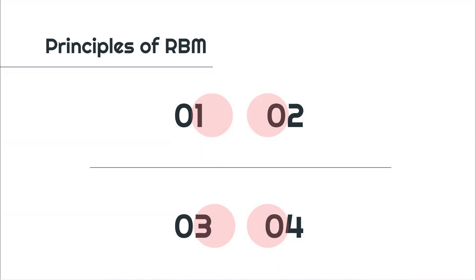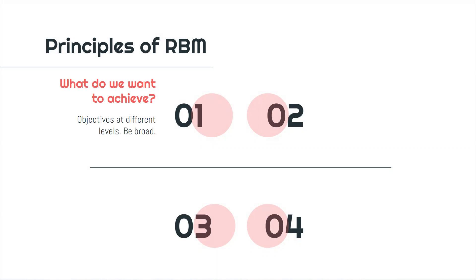Let's get into the actual principles of RBM. RBM seeks to answer the question: what do we want to achieve? Here, we're talking about objectives at different levels — you can be as broad as possible. If you remember in the results framework video, we spoke about outputs leading to outcomes leading to impact. Some people try to stick to those three levels or force their scenario to fit in them.